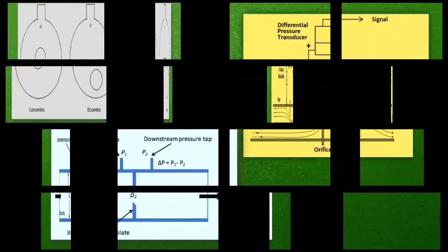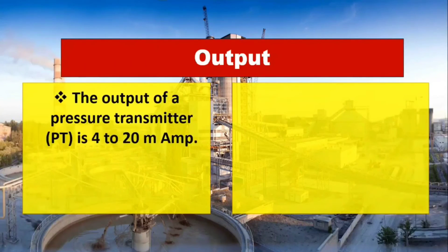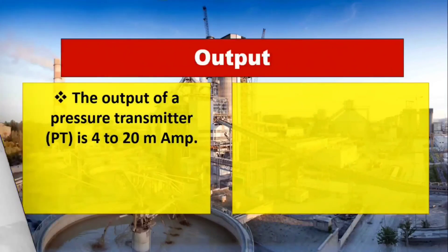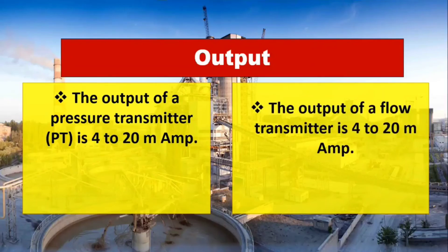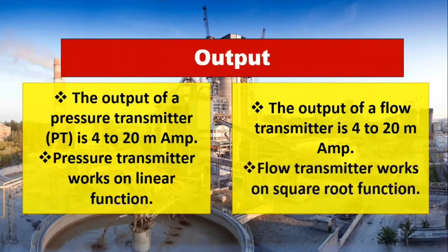The next comparison is output. The output of pressure transmitter is usually 4 to 20 milliampere signal. The output of flow transmitter is also 4 to 20 milliampere signal. Pressure transmitter works on a linear function, whereas flow transmitter works on a square root function. This is a very important difference and you have to keep it in mind.